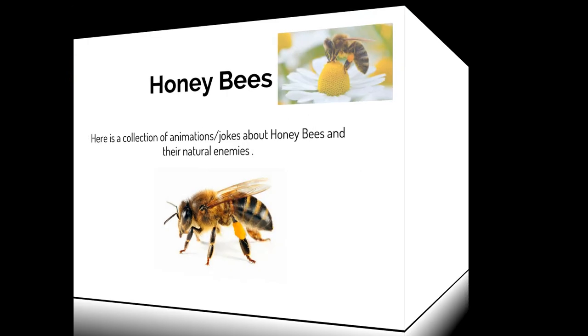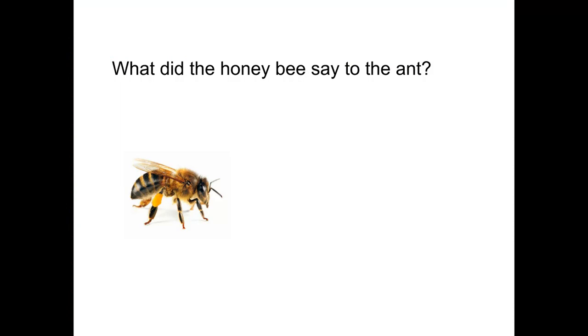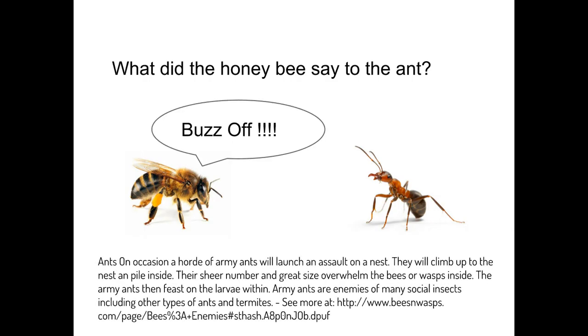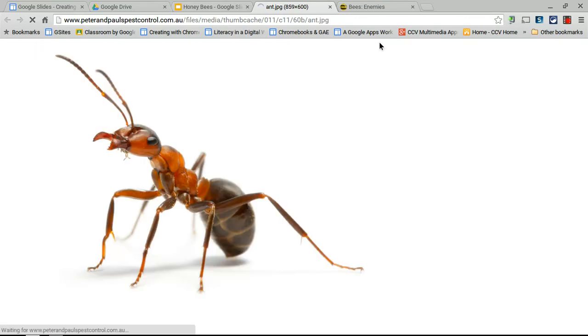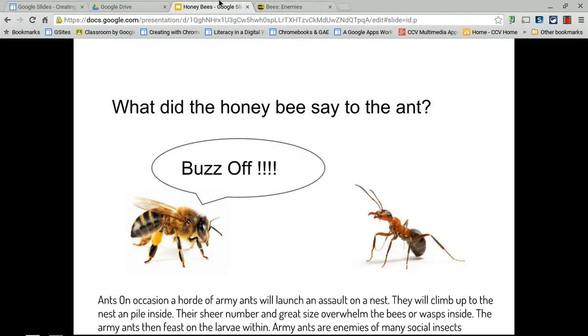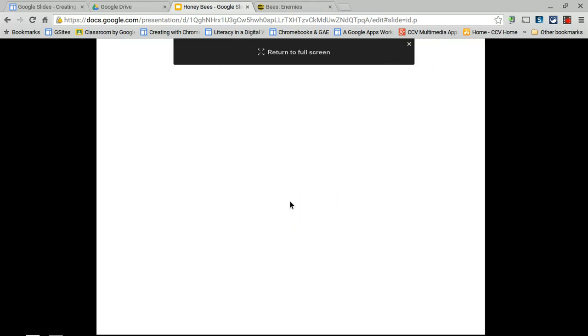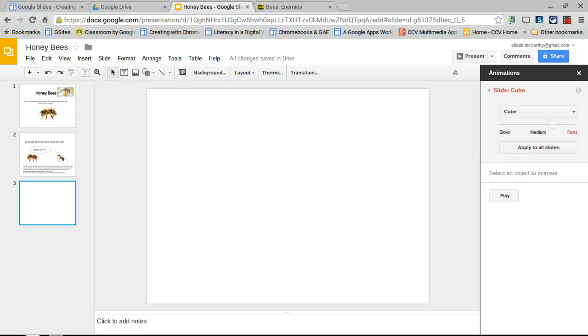When presenting, the title slide requires a click to advance. The animation sequence then plays automatically. You can still go back and adjust things — for example, speeding up the ant's animation. Note that transitions require a click to move between slides in presentation mode.